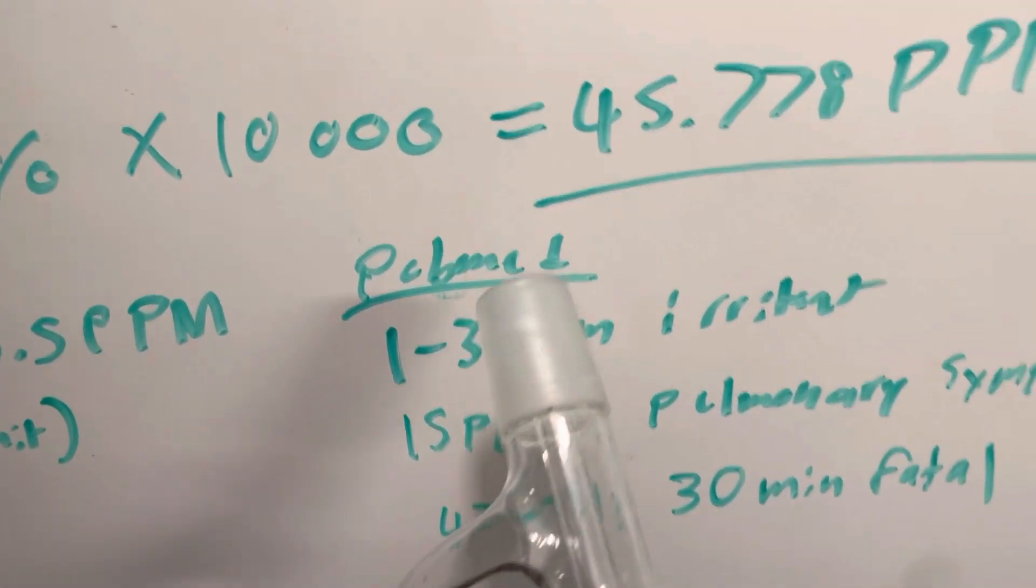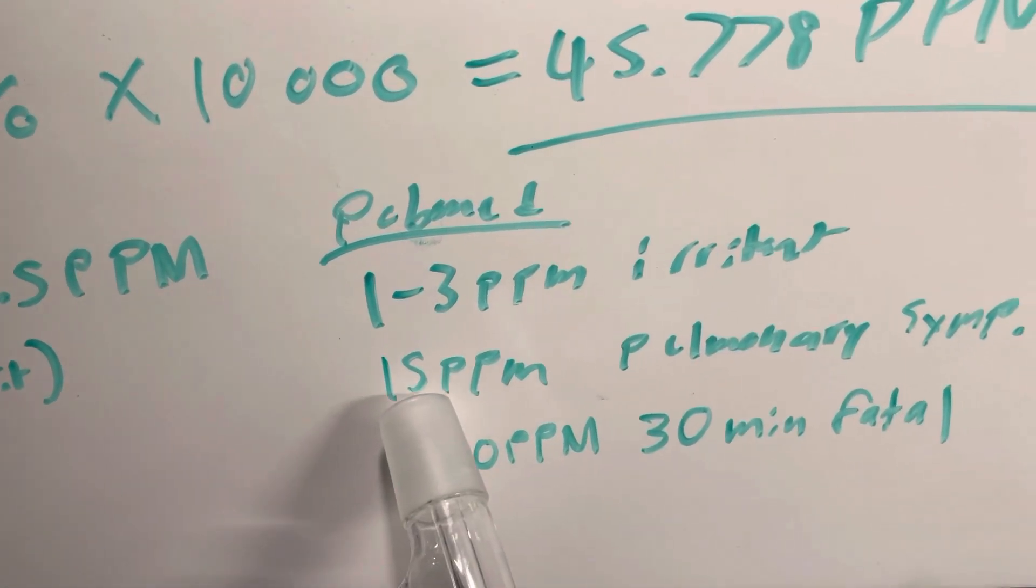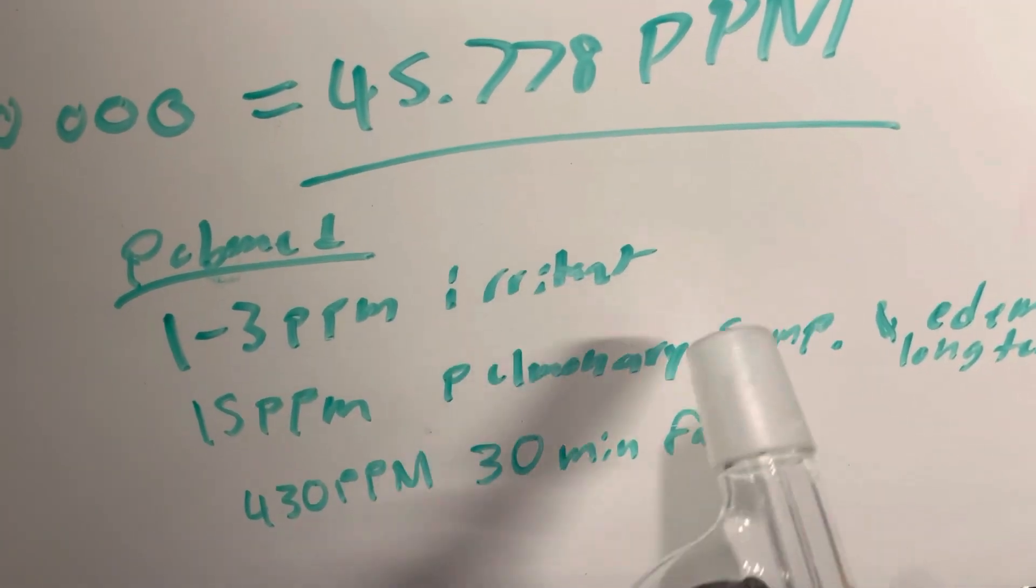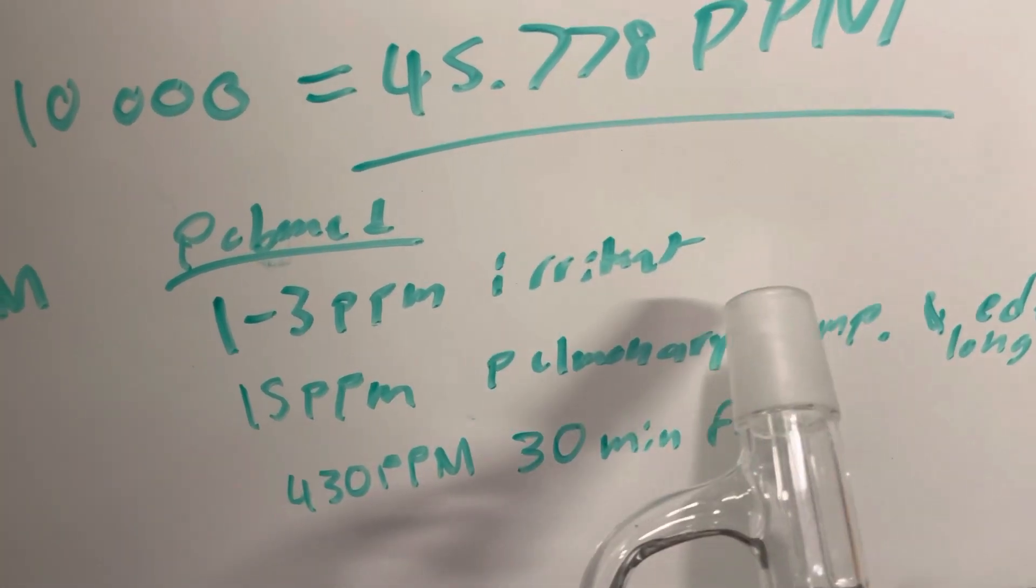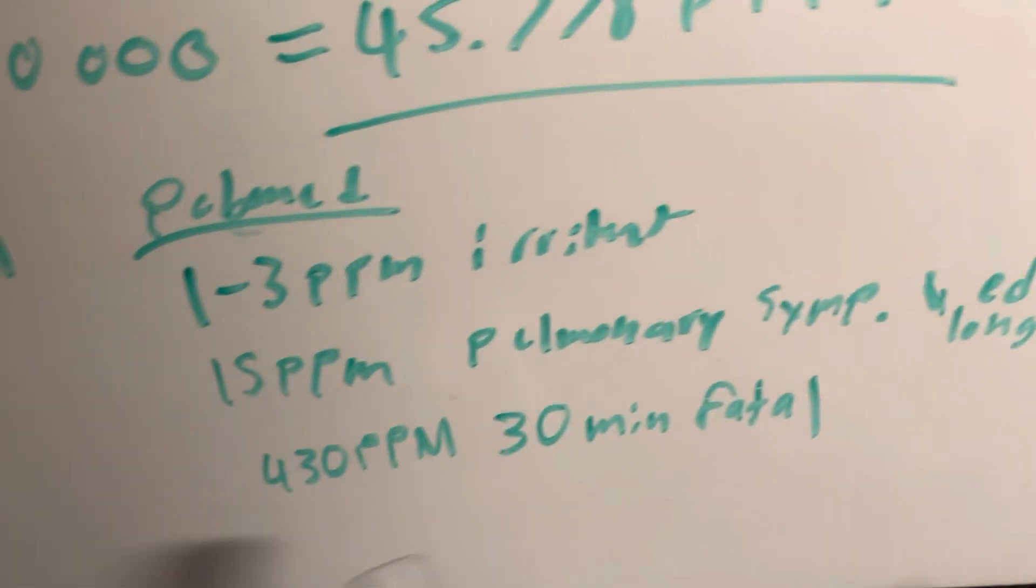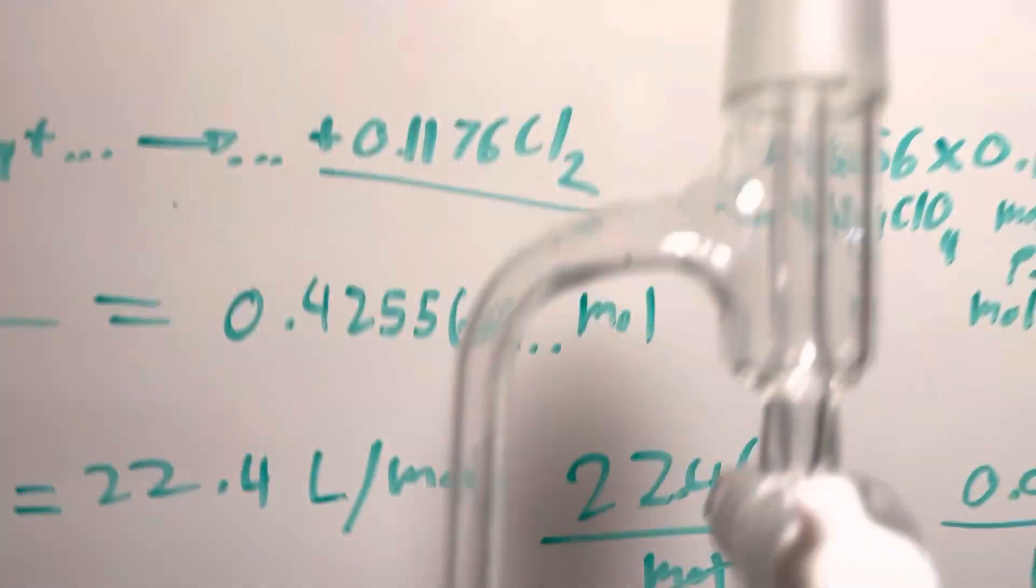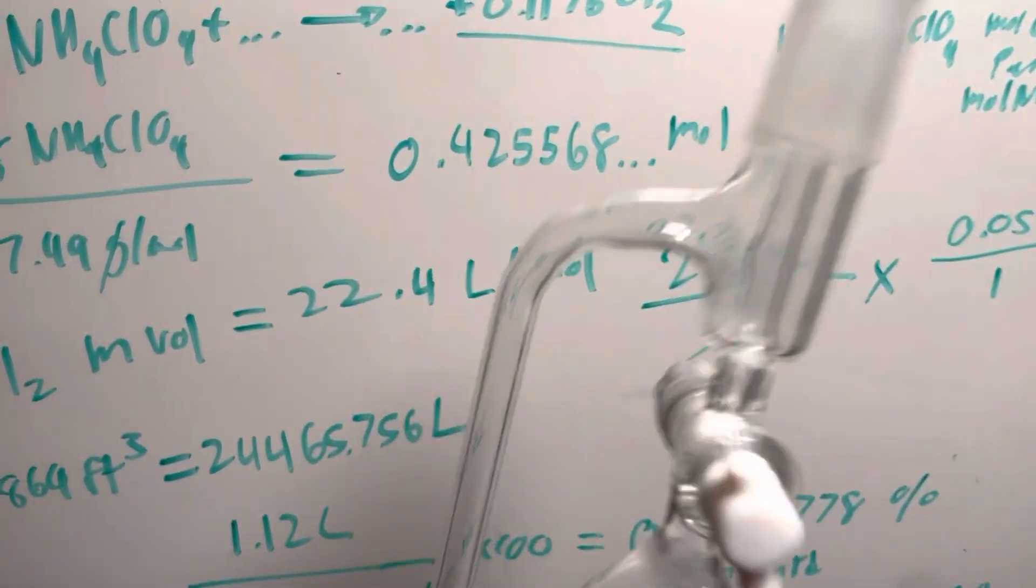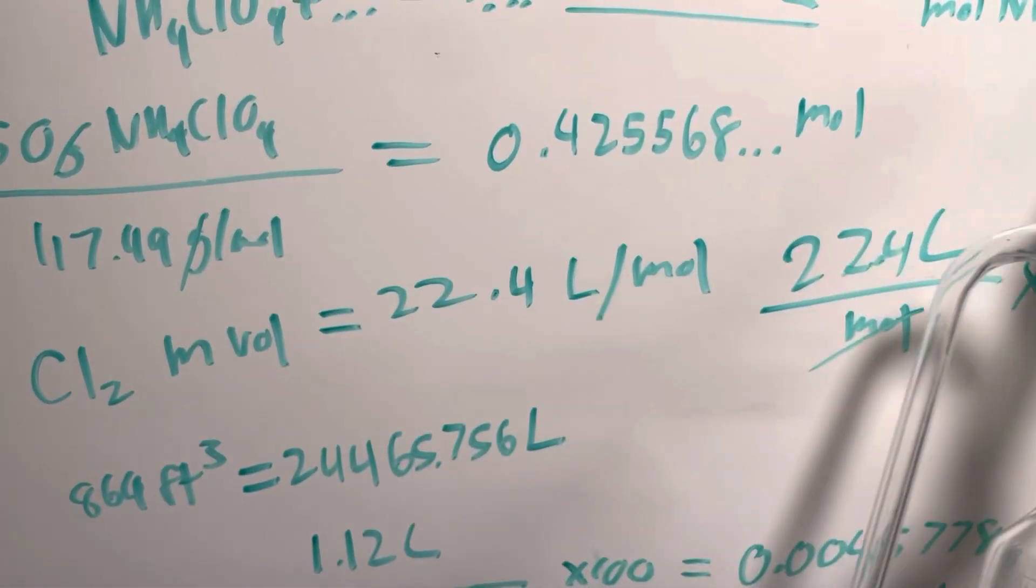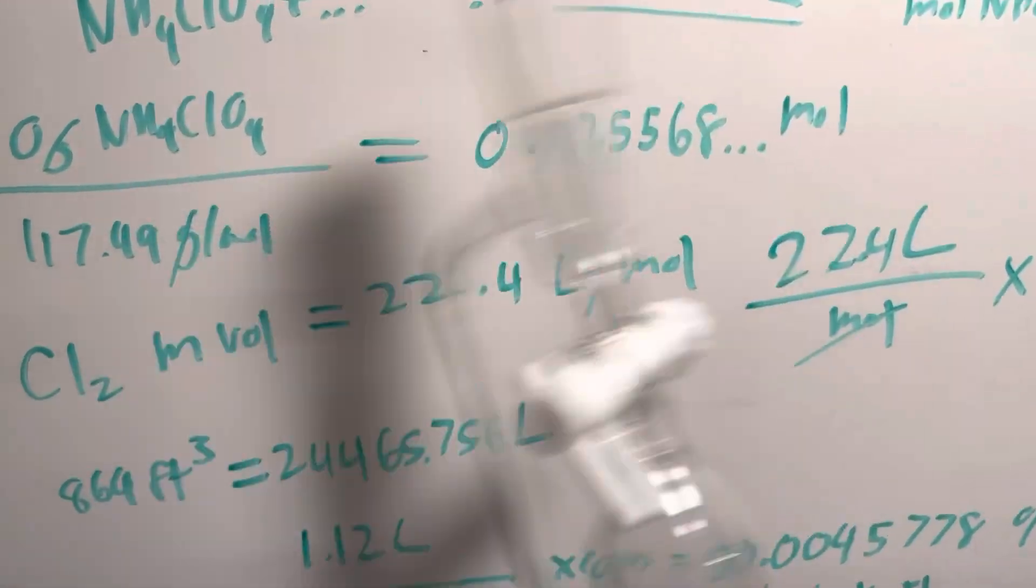So now let's take a look at some safety data. 1 to 3 parts per million is irritating. Above 15 parts per million causes pulmonary symptoms, i.e. coughing and lung damage and wheezing and, yeah, not good. And 430 parts per million above is fatal in 30 minutes, so while it's not instantly fatal, it's going to cause a lot of coughing and wheezing and irritation, which I don't want that. I've had my fair share of chlorine exposure, and it is not fun. So, yeah.